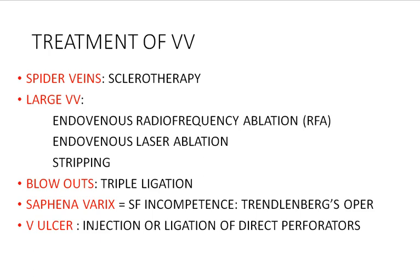For saphenovarics signifying saphenofemoral incontinence, you can perform the Trendelenburg operation, which includes disconnection of the great saphenous from the femoral vein as well as ligation of four or five small veins that enter the great saphenous just prior to its communication with the femoral vein. If you have a venous ulcer, which signifies high venous pressure in the deep system with reflux of blood through the direct perforators present in the lower third of the leg, you have to control these perforators either by injection or by sub-fascial ligation.